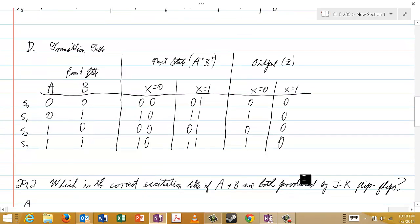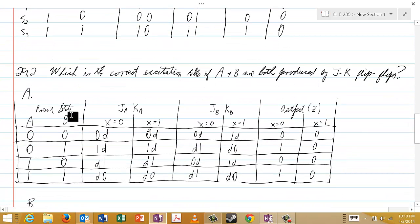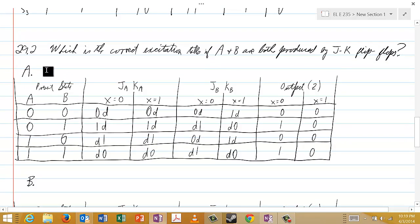And then 29.2, you want to identify which of these is the correct excitation table if A and B are both produced by JK flip-flops. And so here is A, and that's excitation table. I didn't write out excitation table, but each one of these is indeed an excitation table. As you can see, JA and KA are the excitations for the JK flip-flop that produces A, and JB and KB are the JK inputs for the JK flip-flop that produces B.